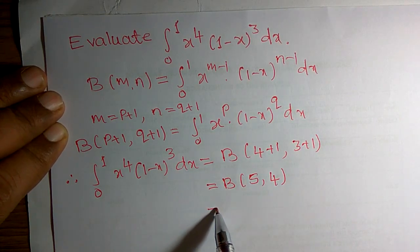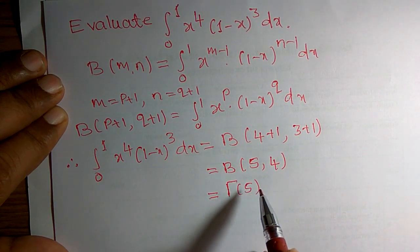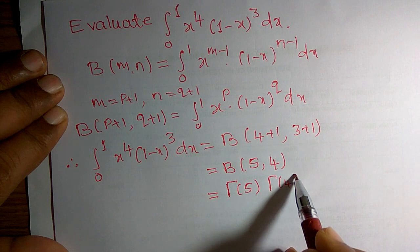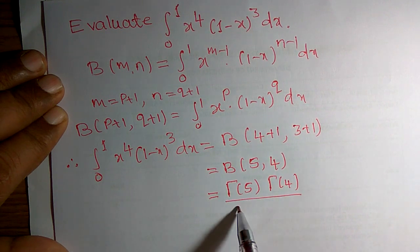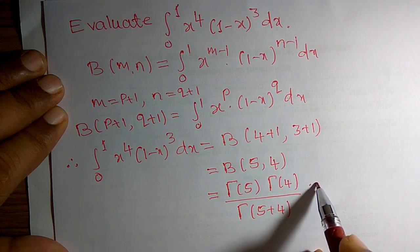This can be written as gamma of 5, gamma of 4, divided by gamma of 5 plus 4. What is the reason?